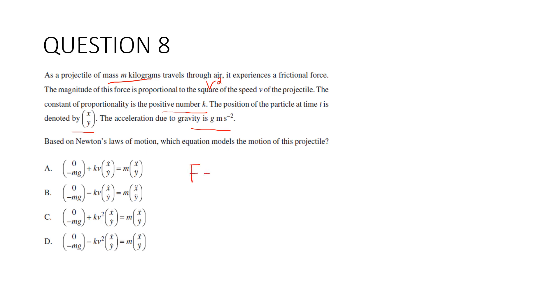We want to use Newton's second law. We want to look at the forces acting on this object. We've got a frictional force working against it. So -kv². And we've also got gravity. Now we're going to write it in vector form. So m(ẍ, ÿ) equals -k.